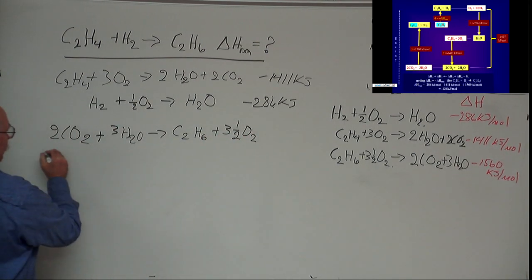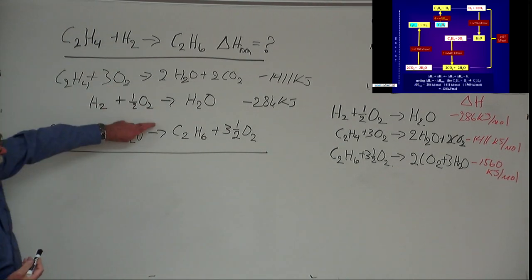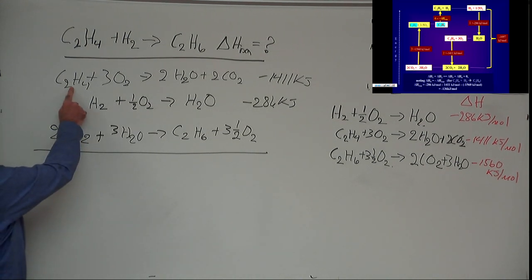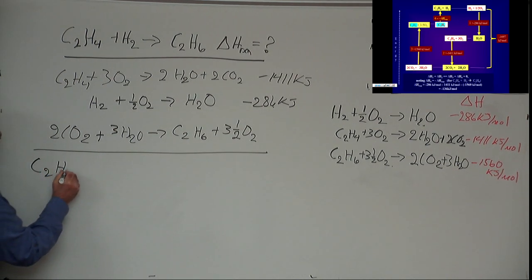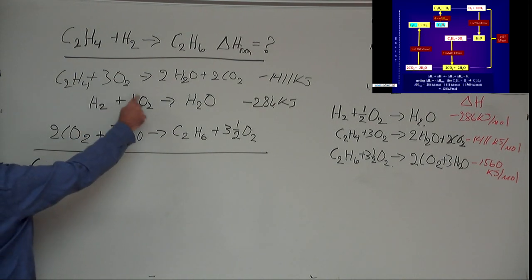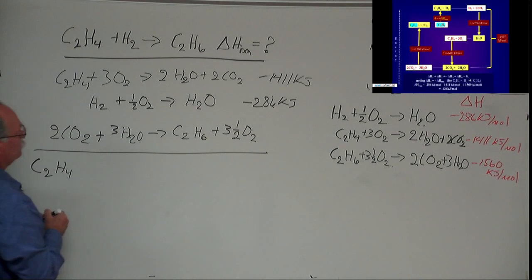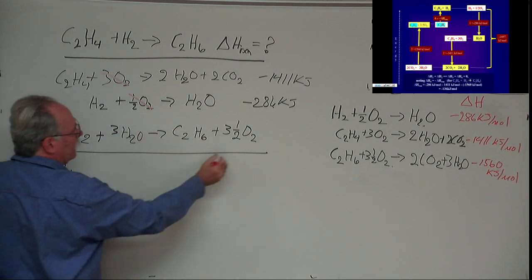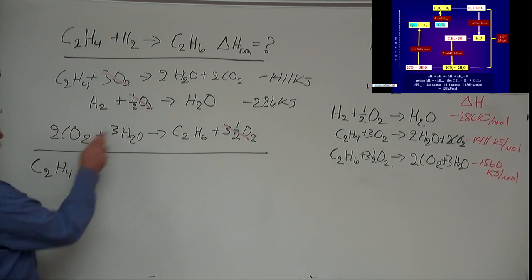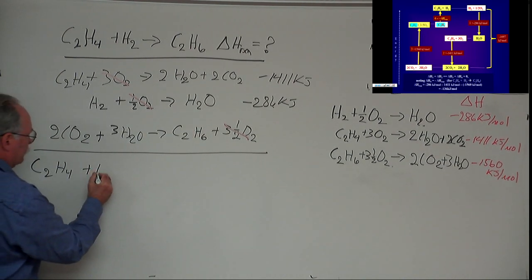Now if I add these equations up, I will get the equation I want. So I come over here, and I have a C2H4. I have no C2H4s on this side, so I write down C2H4. Now I have one, two, three-and-a-half oxygens here. I have three-and-a-half O2s there, so I would typically cancel those out. I'll just draw a red line through them. I have one hydrogen here, no hydrogens there, so I have a plus H2.